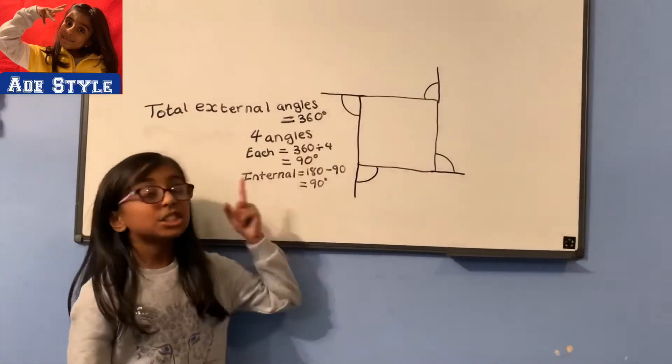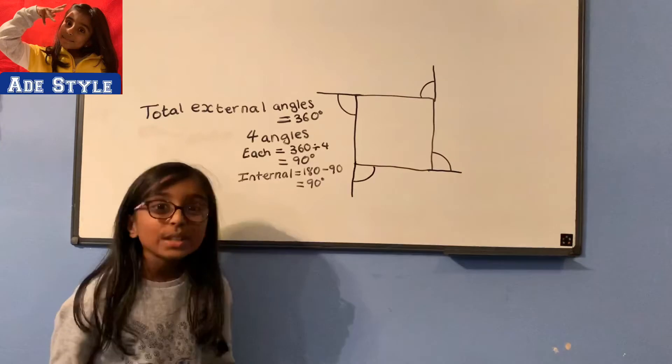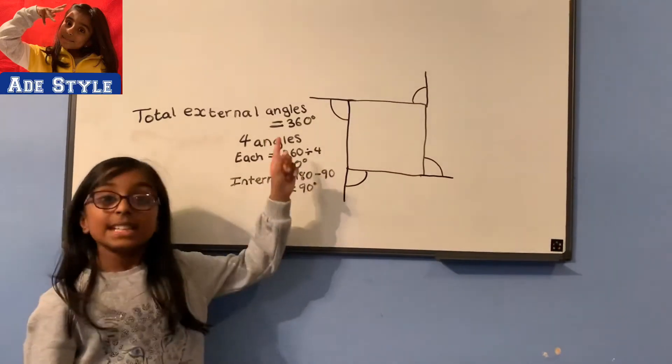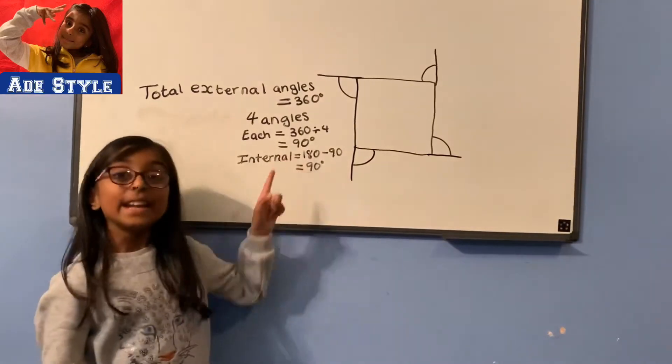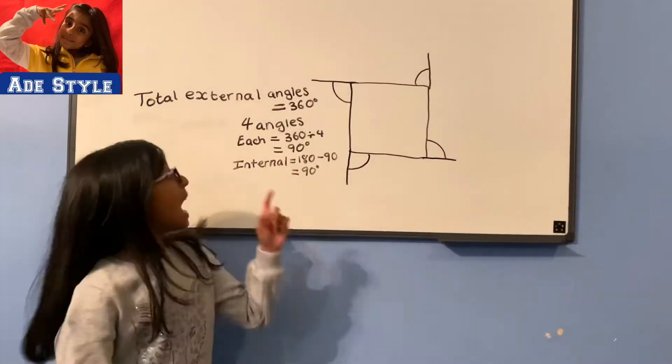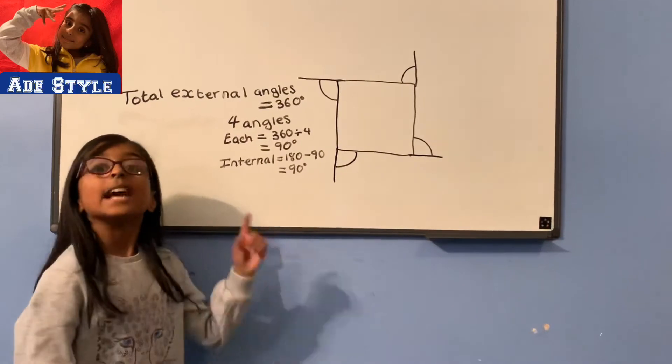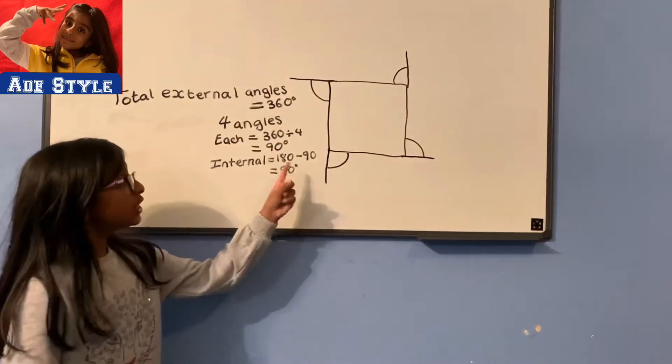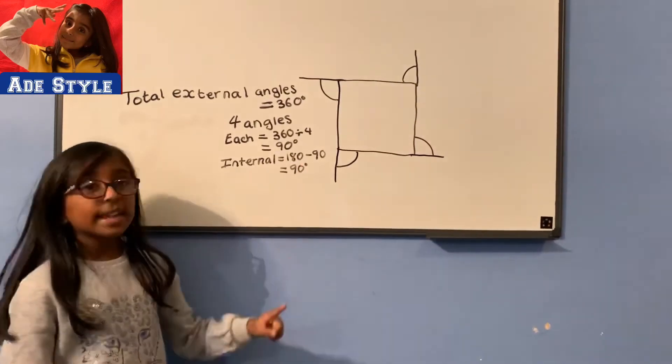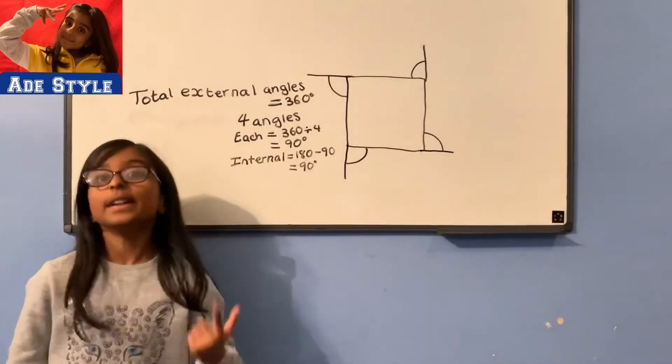So each angle equals 360 divided by 4 which equals 90 degrees. Now we have found the external angles, we will need to find the internal angles which is 180 take away 90, which is also 90 degrees.